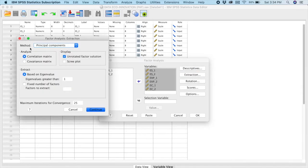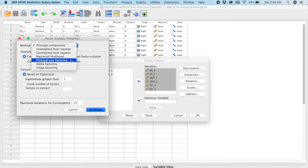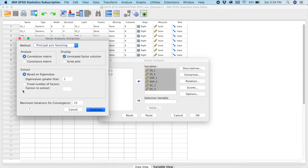For extraction, the default setting is principal components, but we will pick principal axis factoring. And at this section here where we have extract, we will move to fixed number of factors because based on our model, based on the theory, we have three factors. But let's say if you're looking into dimension reduction, then you will take the upper one here which is based on eigenvalue. Click Continue.